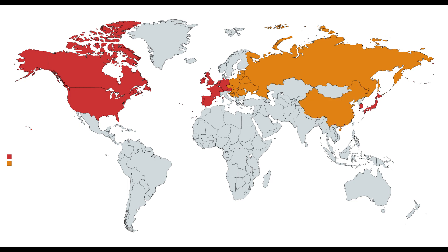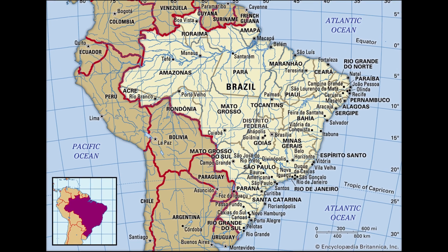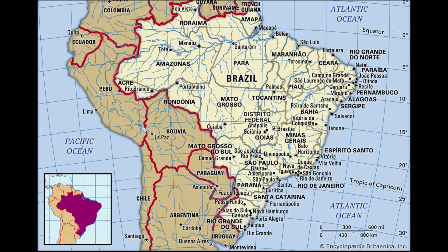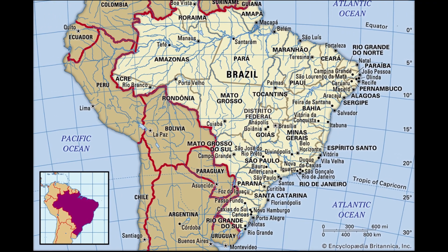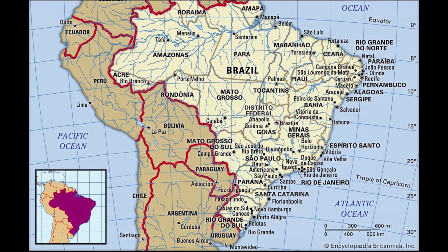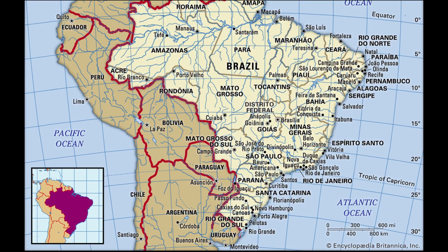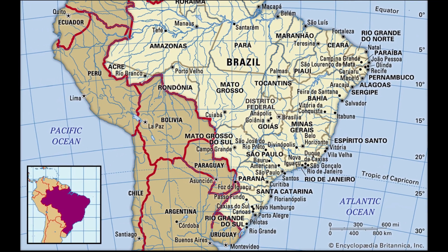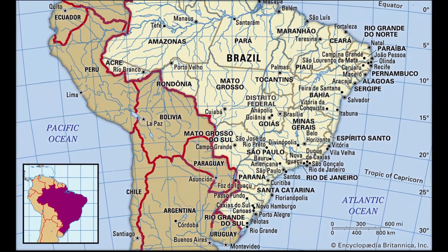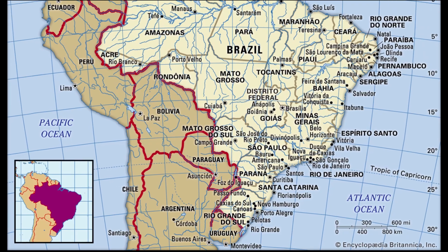In addition, there is a strong temperate-tropical divide within countries that straddle both types of climates. Most of Brazil, for example, lies within the tropical zone, but the richest part of the nation, the southernmost states, is in the temperate zone.